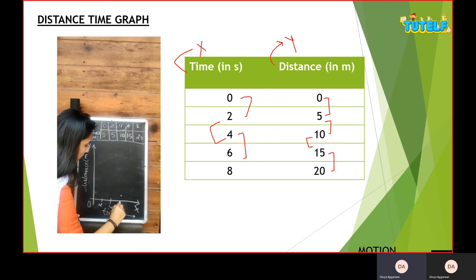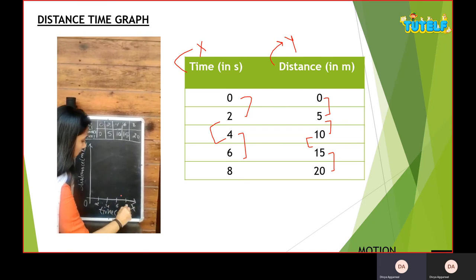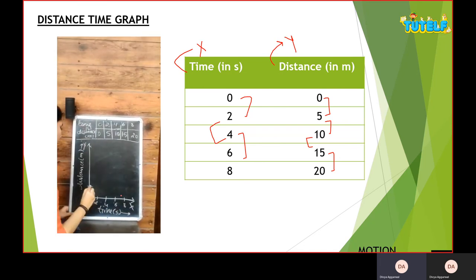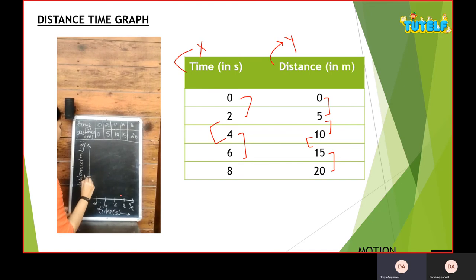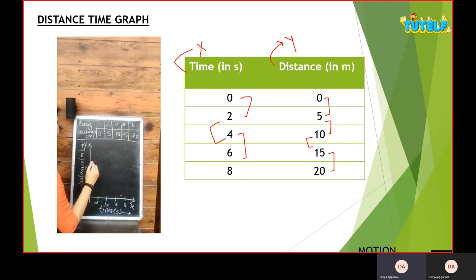We write distance on y-axis and we write units in meters. Then we will do scaling. Time is our 2-2 gap, so we write 2, 4, 6, 8. The origin point has already been denoted by zero. We write distance as 5, 10, 15 and 20. We have also mentioned zero here.